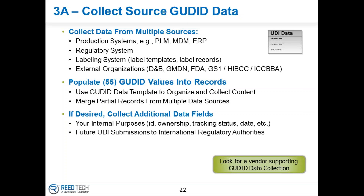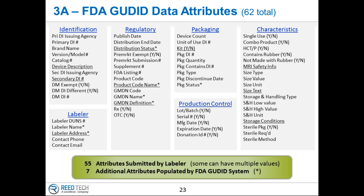There are other considerations as you work your way through collecting this data. The last item talks about collecting additional data fields. I probably would not recommend collecting your international regulatory data at this point in time. For your reference, this slide identifies those 55 fields and the seven additional that the FDA derives from them, for a grand total of 62 in the database.